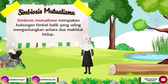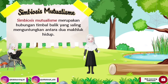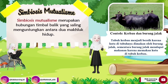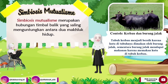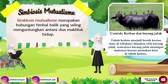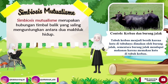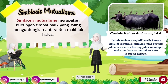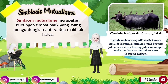Berikut adalah contoh dari simbiosis mutualisme. Contohnya yaitu kerbau dan burung jala. Kenapa interaksi antara kerbau dan burung jala termasuk ke dalam simbiosis mutualisme? Karena tubuh kerbau menjadi bersih karena kutu di tubuhnya dimakan oleh burung jala. Sementara burung jala mendapat makanan karena memakan kutu di tubuh kerbau.